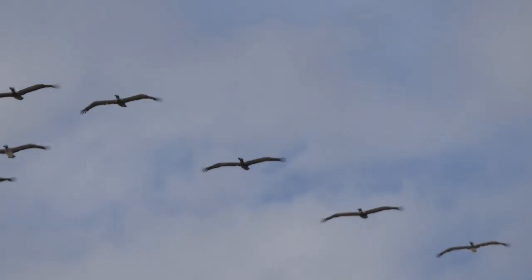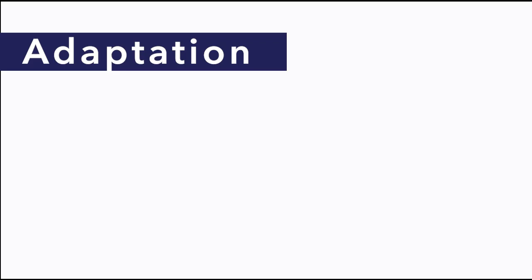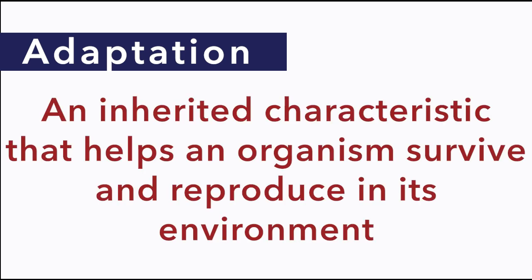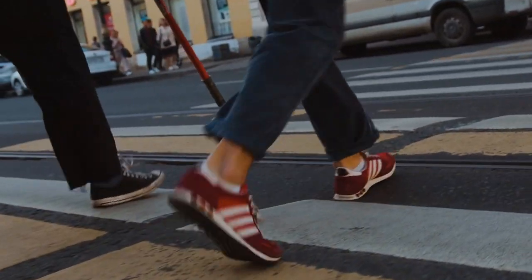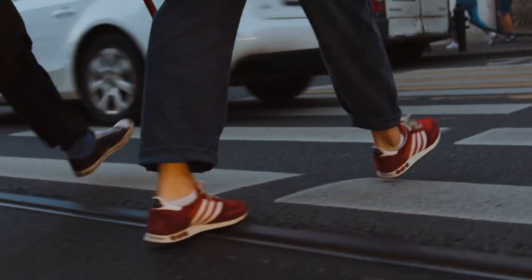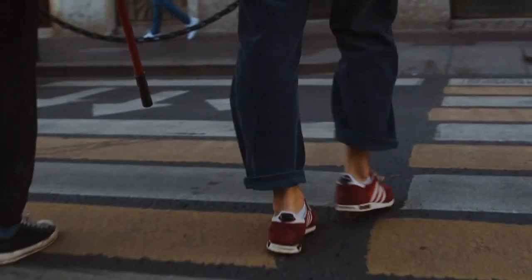For example, many of the bones in a bird's body are hollow. This characteristic makes the bird lighter so it can more easily fly. The fit between an organism and its environment is called adaptation. An adaptation is an inherited characteristic that helps an organism survive and reproduce in its environment. Sometimes characteristics that help animals survive in their environment are learned during the animal's lifetime. Humans learn to look both ways before crossing the street, but this is not an adaptation because it is not inherited.